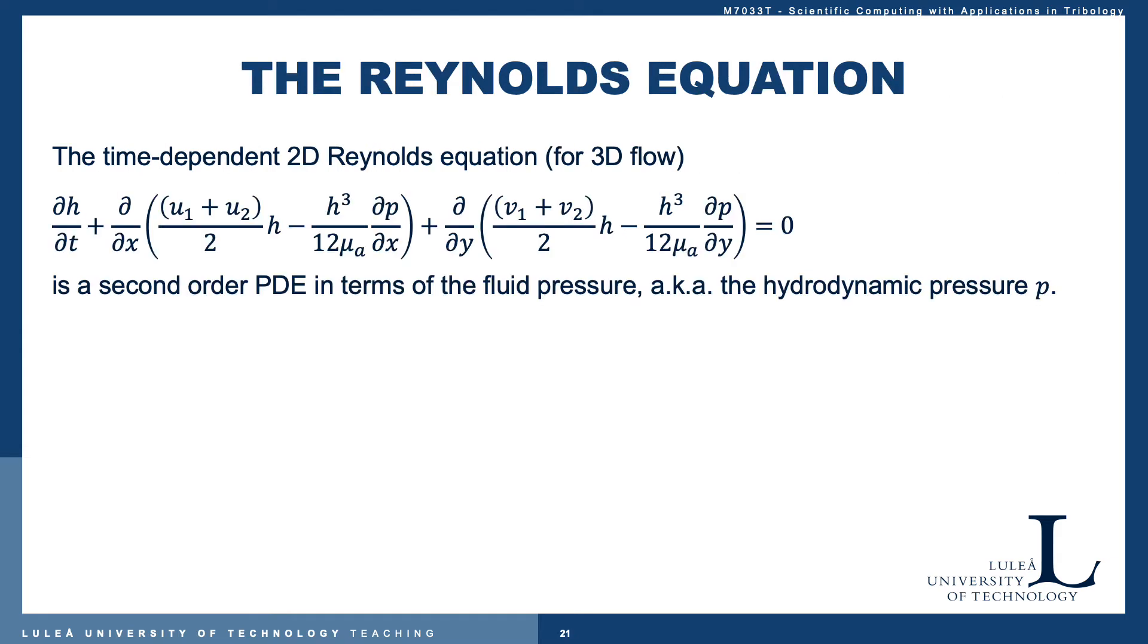For 3D flow we have a 2D Reynolds equation, a dimension-reduced model for the thin film flow, presented here in component form. This is a second-order partial differential equation in terms of the fluid pressure, also most often referred to as the hydrodynamic pressure p. But as we've seen, it's the mechanical pressure from our previous analysis.